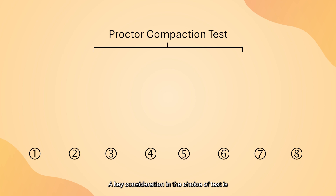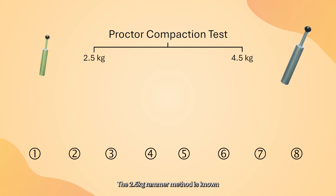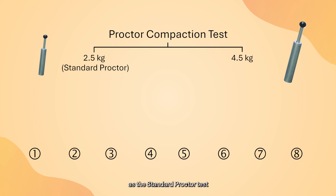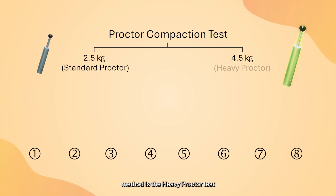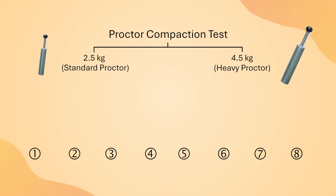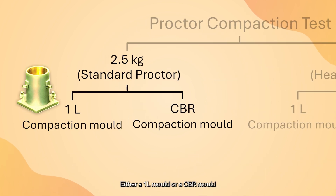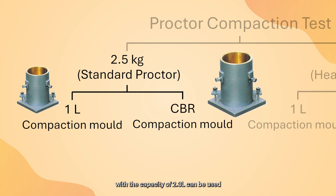A key consideration in the choice of test is rammer weight. Either a 2.5 kg or a 4.5 kg rammer can be used. The 2.5 kg rammer method is known as the standard proctor test, while the 4.5 kg rammer method is the heavy proctor test, which has a compactive energy input 4.5 times larger than the standard proctor test. Another consideration is the capacity of the compaction mold: either a 1 liter mold or a CBR mold with a capacity of 2.3 liters can be used. The CBR mold is suitable for coarse-grained soils.